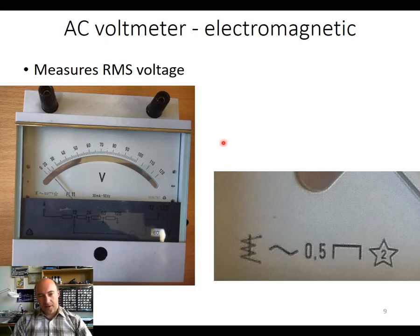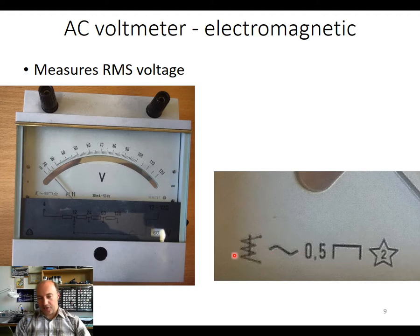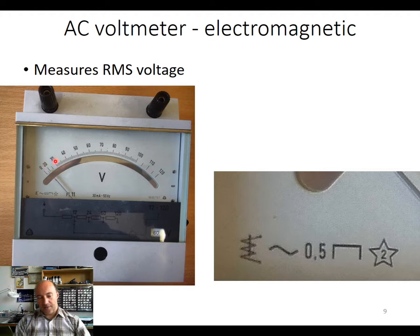Here you can see a different type of AC voltmeter that uses a different system. The previous voltmeters were magnetoelectric and measure the mean value of the signal. This system is called electromagnetic, and in principle it measures the RMS value. You can see that the scale is not linear — there is not such fine resolution at the beginning and end as there is in the middle of the scale.